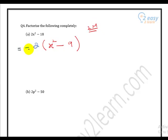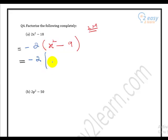We have factorized once, but if we observe the bracket, we can see this is a square term and nine is also a perfect square — it is the square of three. This means we have to factorize further. The difference of squares condition is fulfilled here.